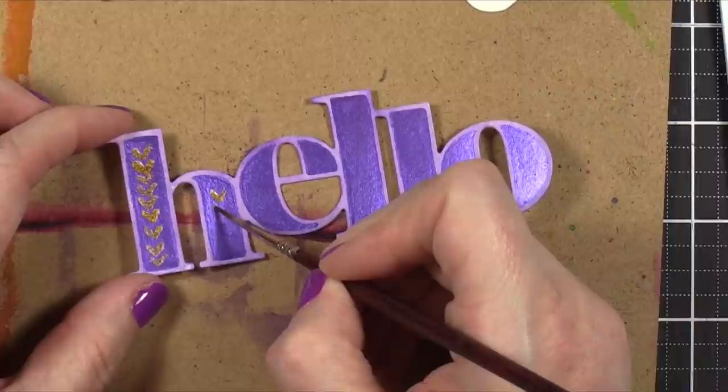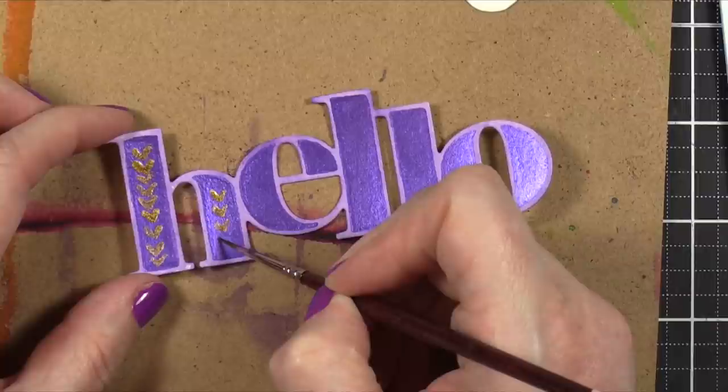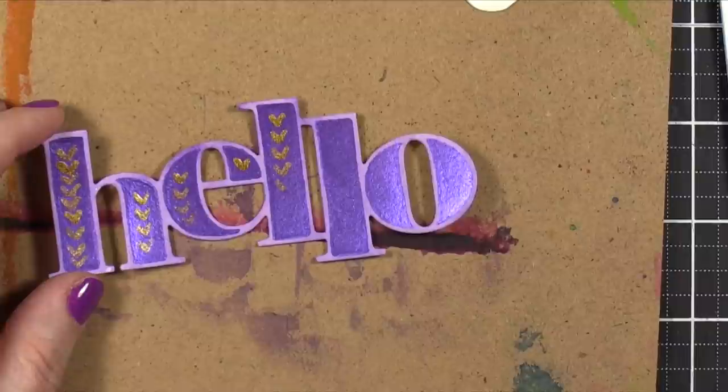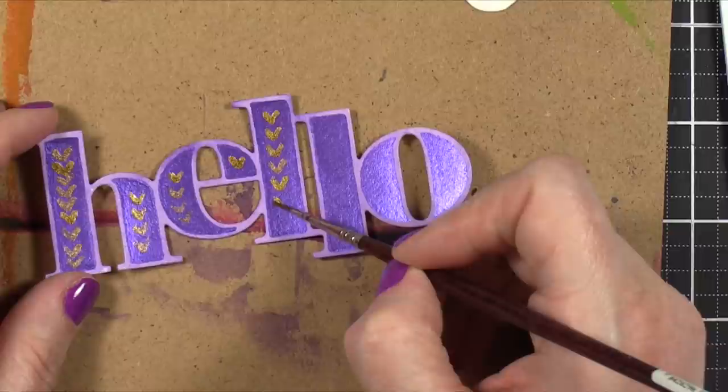So notice that I started drawing these V shapes, which sort of look like hearts. I started that on the letter H and they look sort of blobby and messy at the beginning. That was because I really didn't have an idea of what I was doing. I probably should have practiced a bit before I went directly on this, but I didn't.